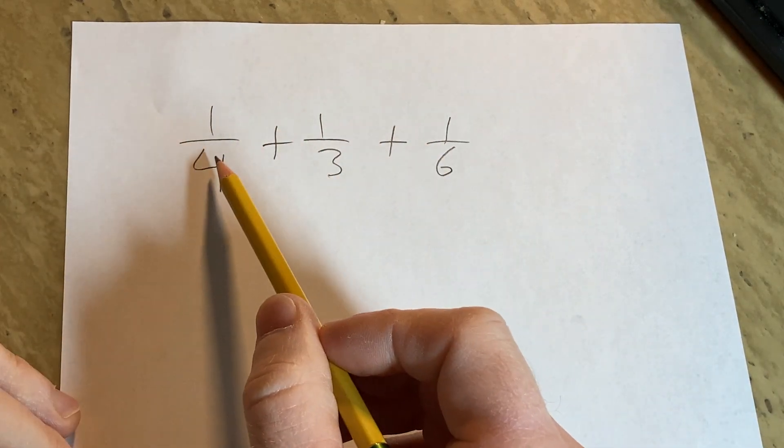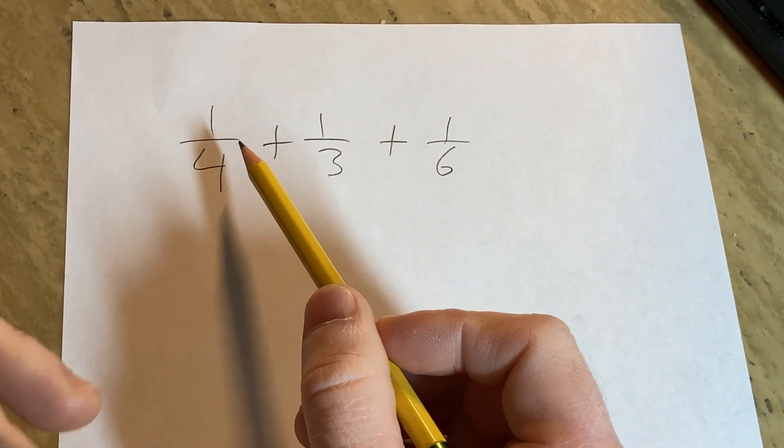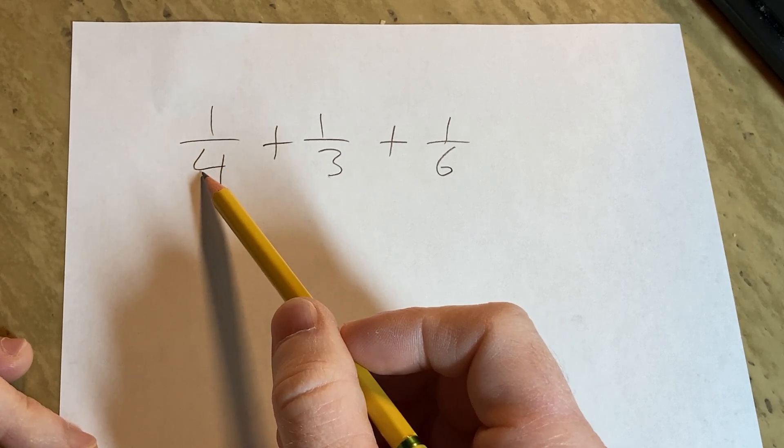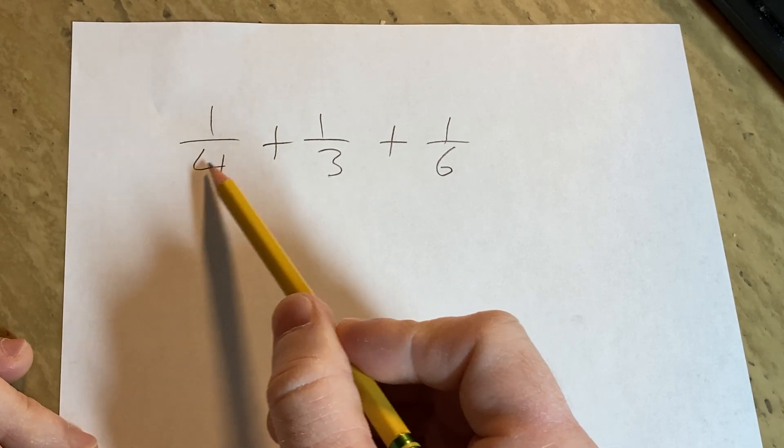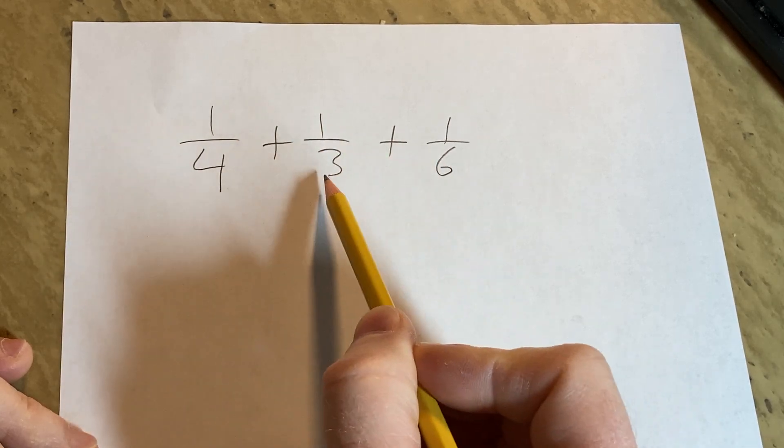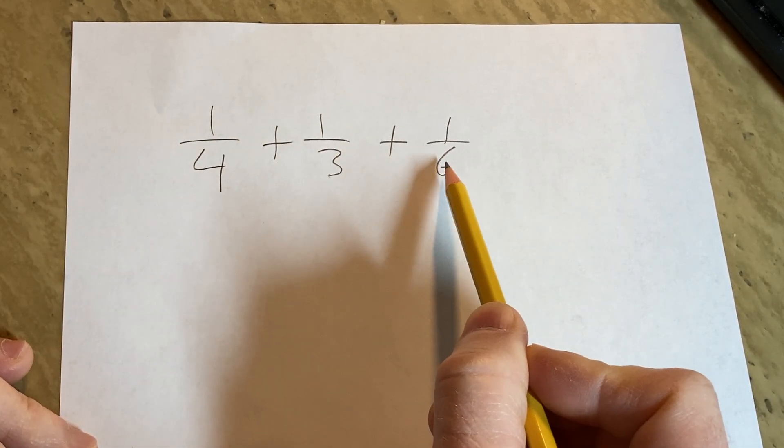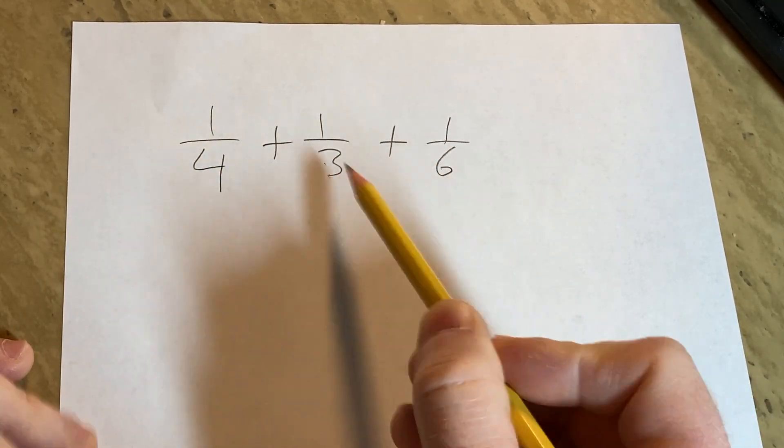We have to find what's called a common denominator. We have to think about a number that we can use for each denominator, and we're allowed to modify these numbers by multiplying them to get to that number.